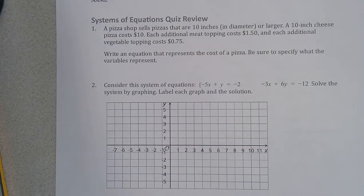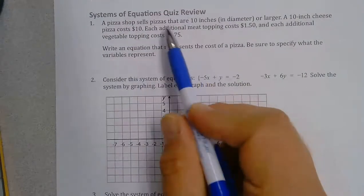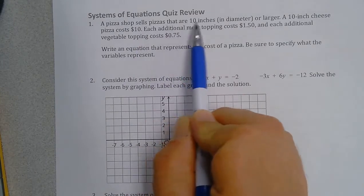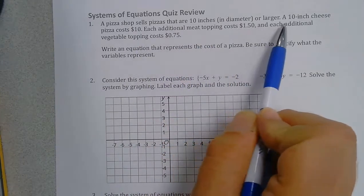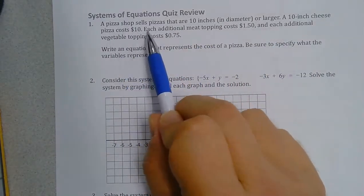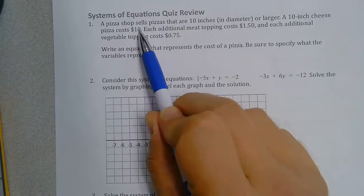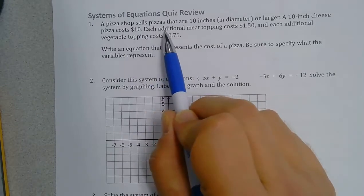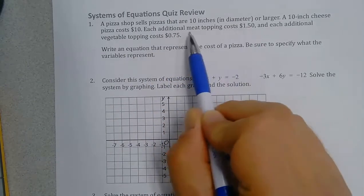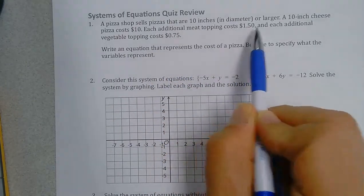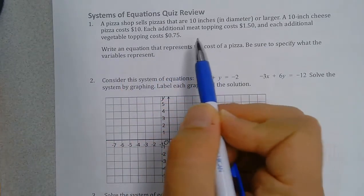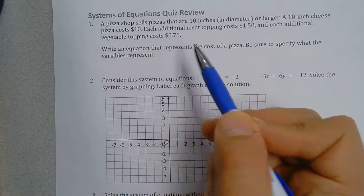Here's a systems of equations review. A pizza shop sells pizzas that are 10 inches in diameter or larger. A 10-inch cheese pizza costs $10. Each additional topping costs: a meat topping costs $1.50 and a vegetable topping costs $0.75.